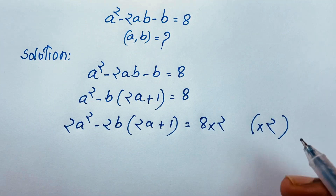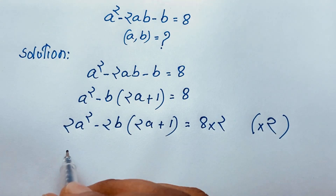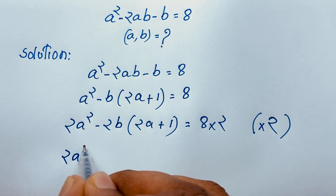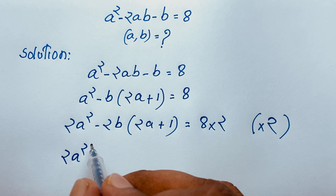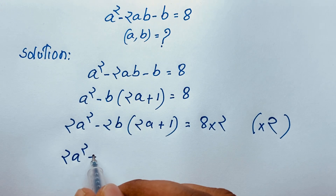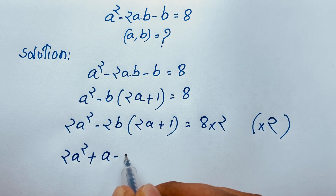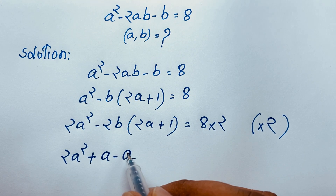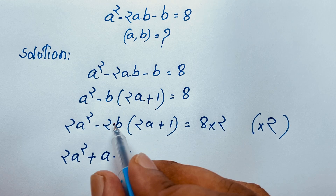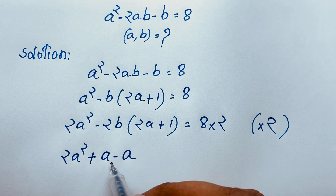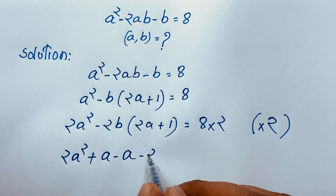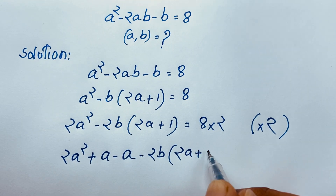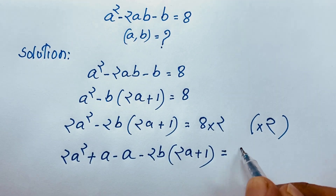At this moment you can see here 2a². I add a positive a and then subtract a again, so they cancel to zero. This manipulation allows us to rearrange. We get 2a minus 2b, then we find 2a plus 1 times a equals 16.